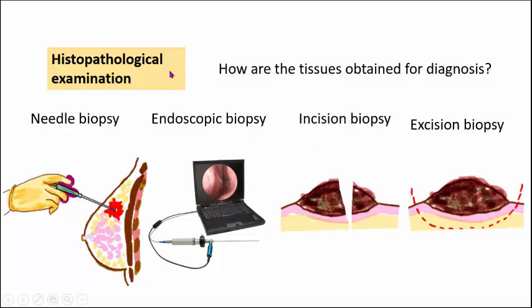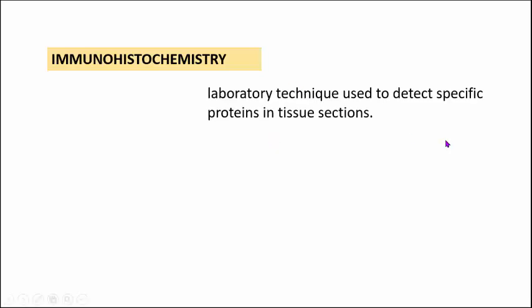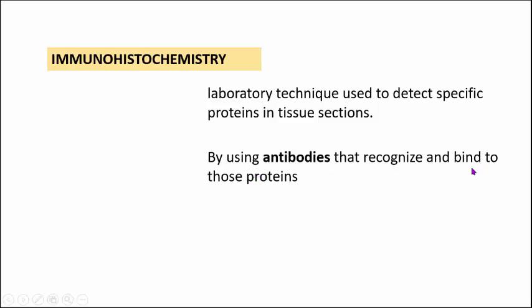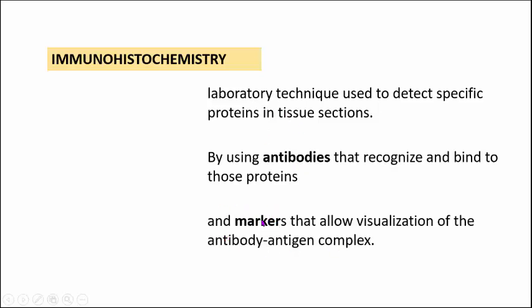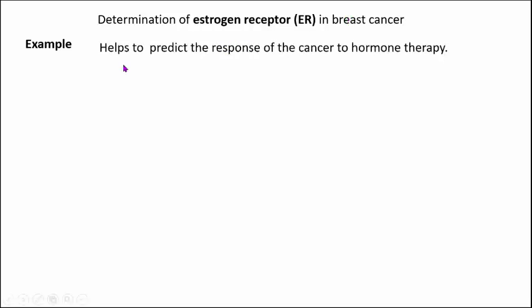Once you have made a probable diagnosis on histopathological examination, the next investigation is immunohistochemistry. This is a special technique used to detect specific proteins in tissue sections, using antibodies that recognize and bind to those proteins, along with markers that allow visualization of the antigen-antibody complex. For example, in breast cancer, we determine estrogen receptor status on the cancer cells. If the cancer has estrogen receptors, it helps predict the response of the cancer to hormone therapy.